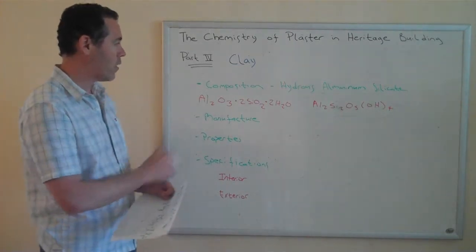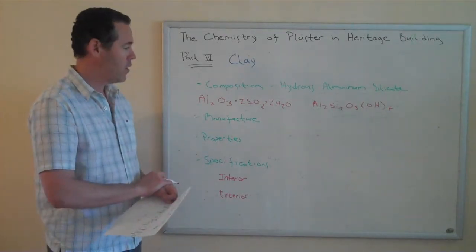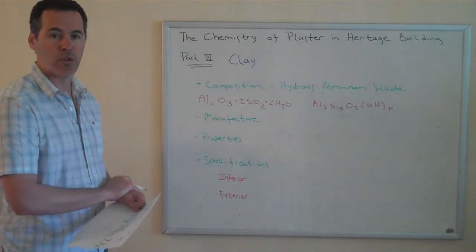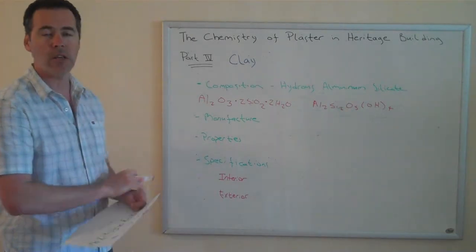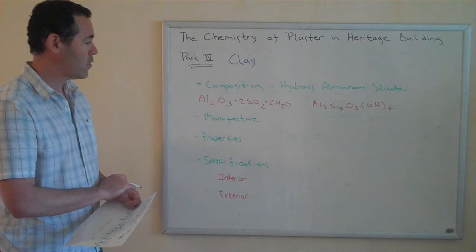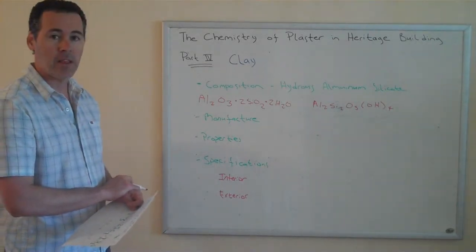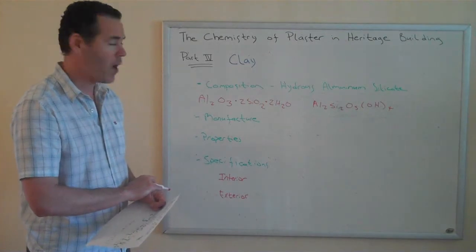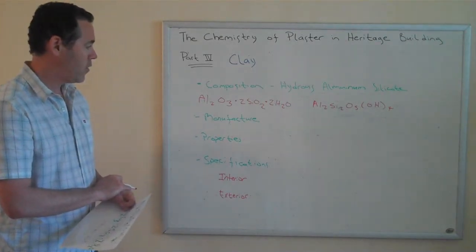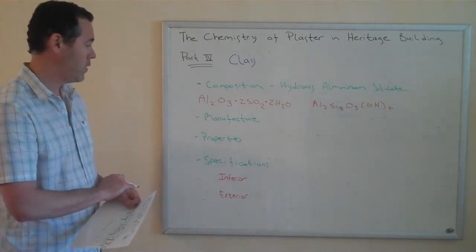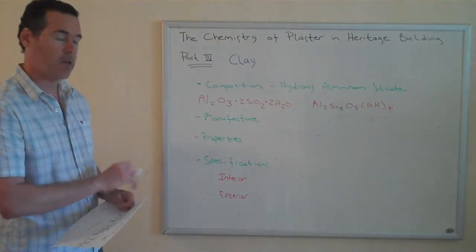How are clays manufactured? Clays exist all over the world, sometimes at the surface of the earth or maybe just underneath a layer of topsoil. They're easily accessible. You can dig them up, lay them out in the sun, and let the sun dry them out. The manufacturing process is a very low embodied energy process. There's no cooking involved.